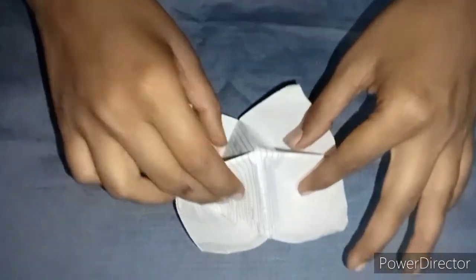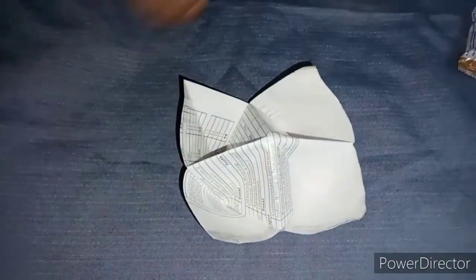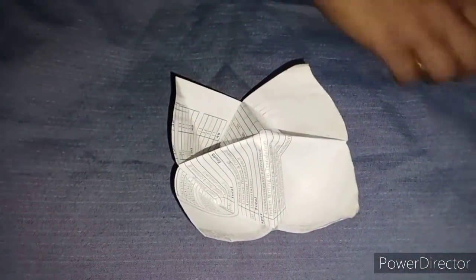Now do like this. You can see four pocket-like structures formed. Now the candies are with me.